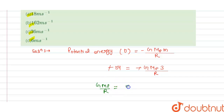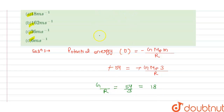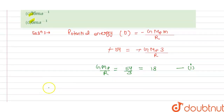This equals 18. So we get the value of GM/R equals 18. Let this be equation 1. Now we need to find the escape velocity using the escape velocity formula.